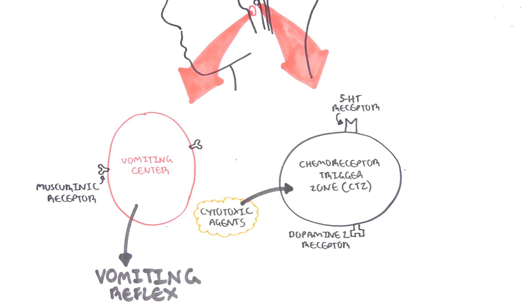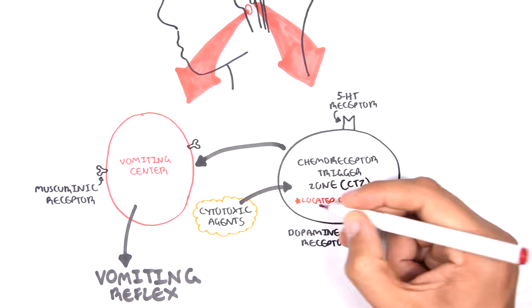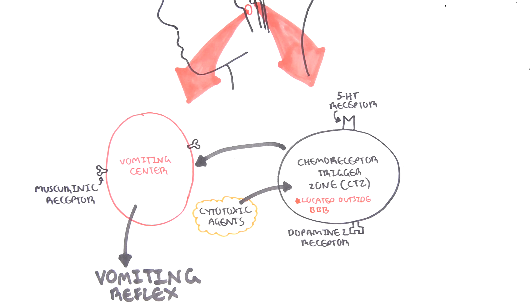When the chemoreceptor trigger zone is stimulated, it will then stimulate the muscarinic receptors of the vomiting center, causing the vomiting reflex. Though the chemoreceptor trigger zone is located in the medulla like the vomiting center, it is located conveniently outside the blood-brain barrier. The blood-brain barrier prevents circulating substances in the blood from making contact with the brain. Because the CTZ is situated outside the blood-brain barrier, it is more permeable to circulating substances such as cytotoxic agents and chemotherapy.